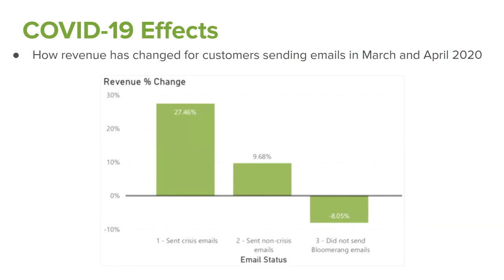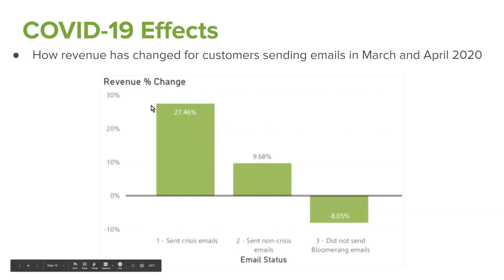Mass emails are only one channel. There's obviously letters, phone calls, and even in-person meetings, which can be tough in current circumstances. But those that did not send any Bloomerang emails this year — specifically in March and April — are overall down by about 8% compared to last year. Getting that touch, getting that communication out, and sharing the good things your organization is doing will make a difference and will help generate more revenue for your nonprofit.